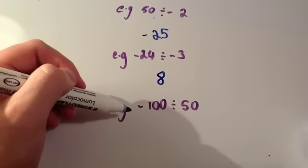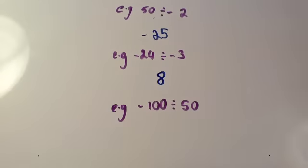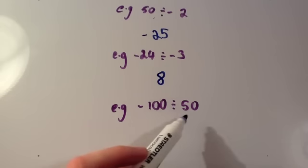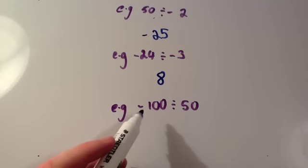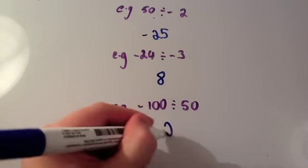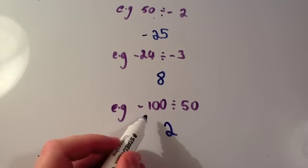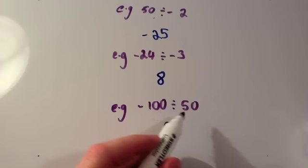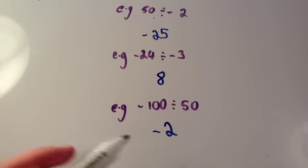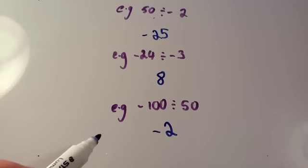And finally, negative 100 divided by 50. Well, 100 divided by 50 is 2. And a negative divided by a positive is a negative. So the answer is negative 2. Thank you.